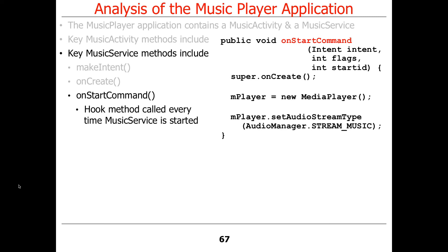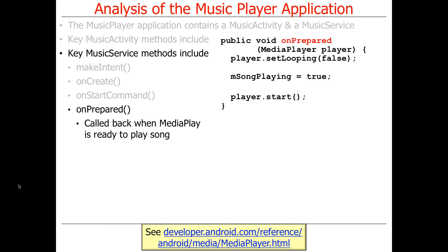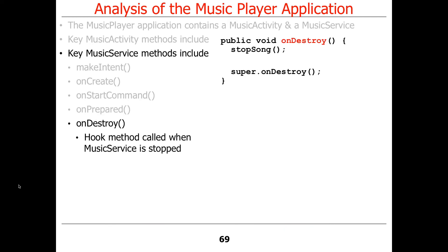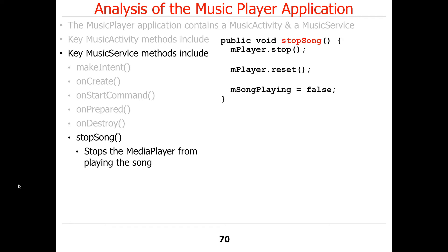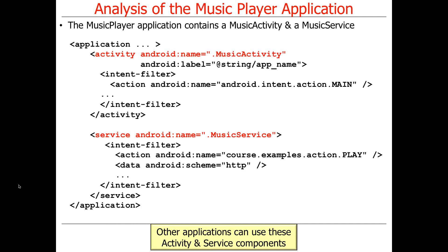An interesting point: even though the service runs in a separate address space (because we set the process attribute in the manifest), the makeIntent method lives in the activity's address space. The activity is still linked to the service class and can call static methods on it. When startService is called with the intent, the service's onStartCommand is invoked in the separate process. It's a bit confusing but comes in handy for factory method-oriented designs.